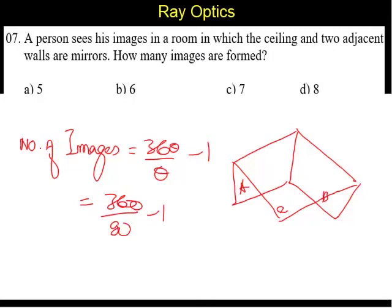So, it is going to be 4 minus 1, so 3. So now, there is this number of images between these two is 3, but ceiling with each face will form another 3 images. So, the ceiling along with this image forms another 3. So, there will be 3 from one wall and the ceiling, another 3 from another wall and the ceiling.